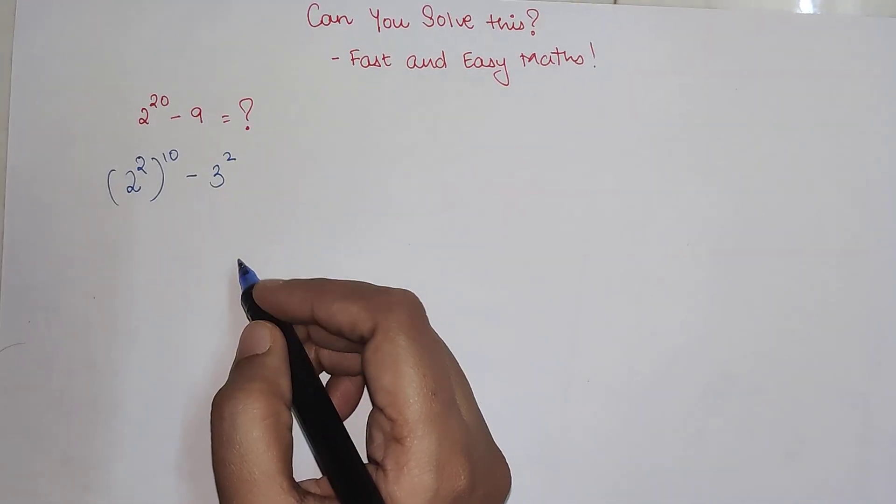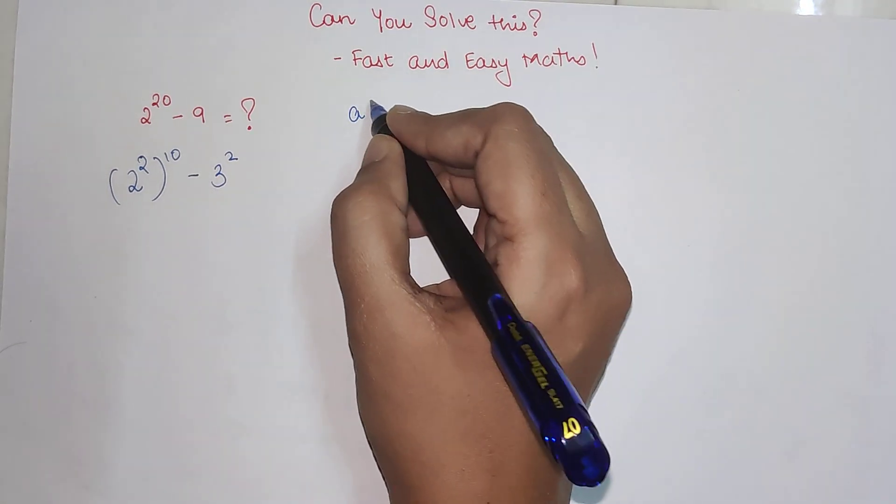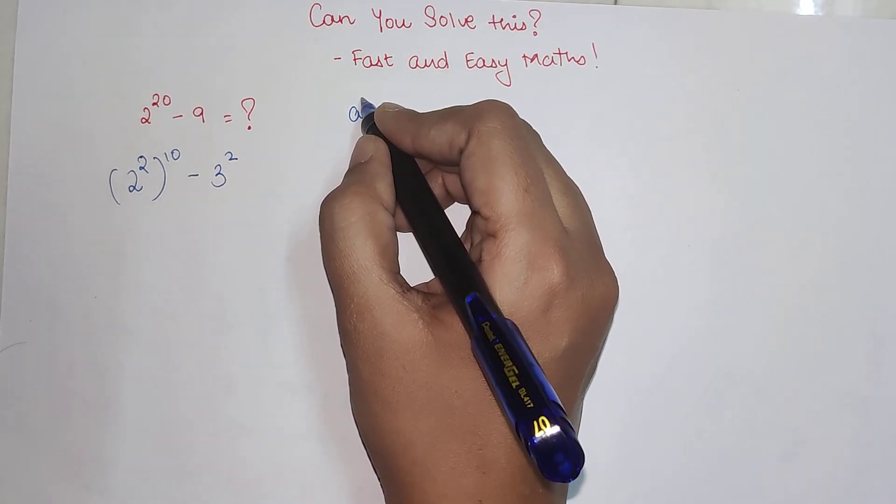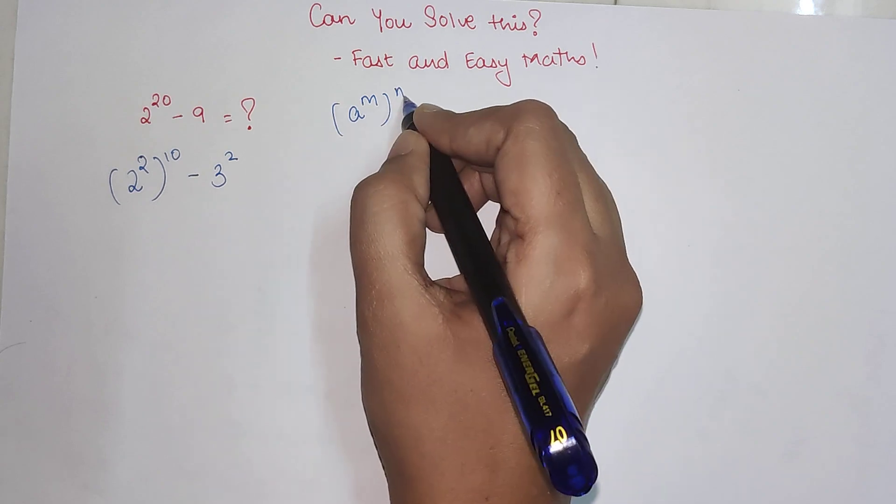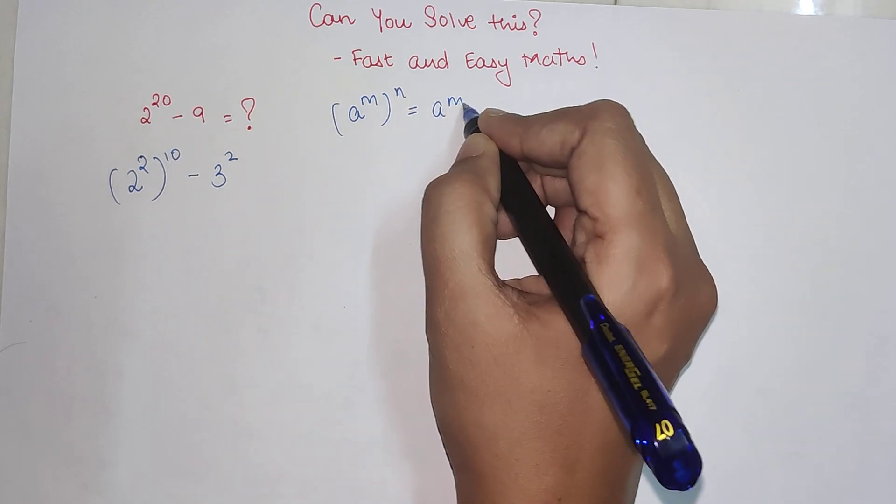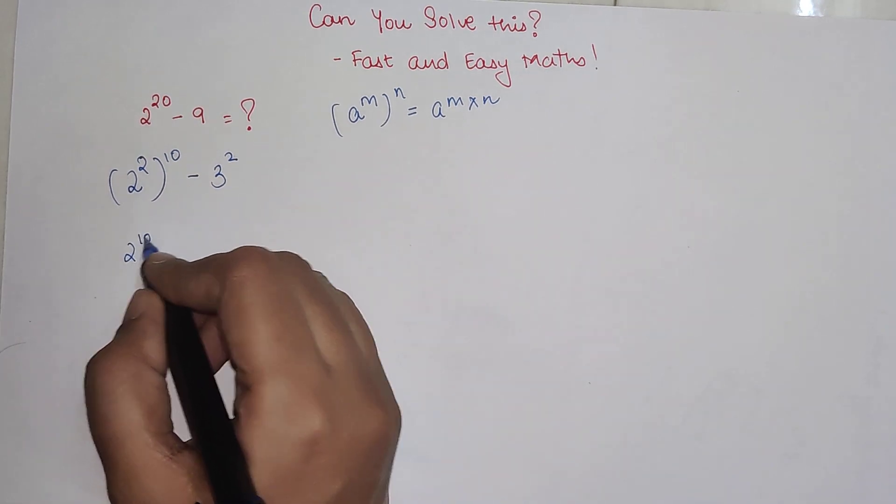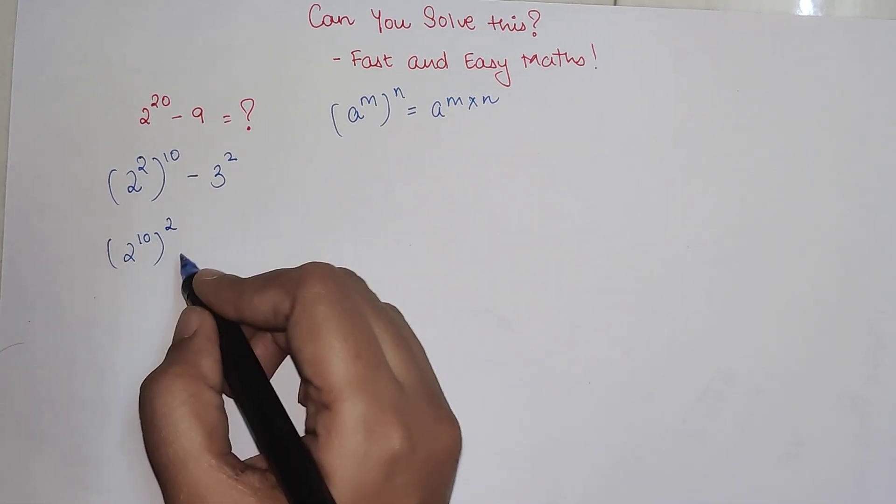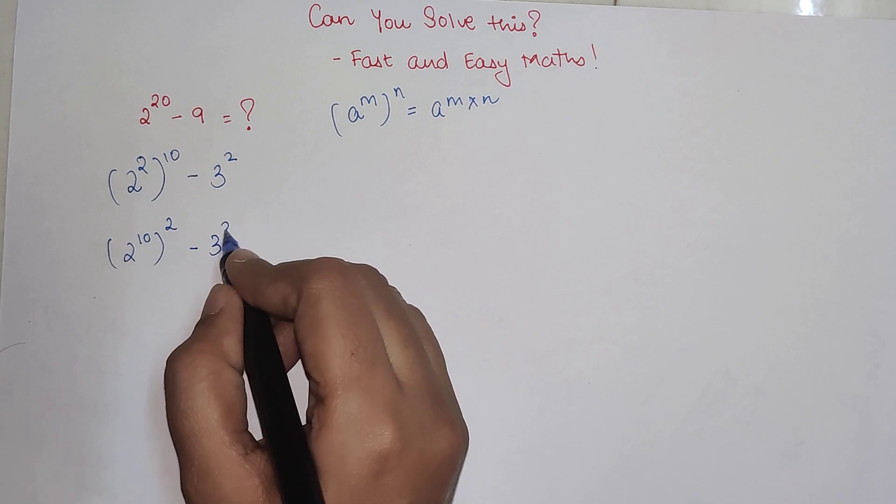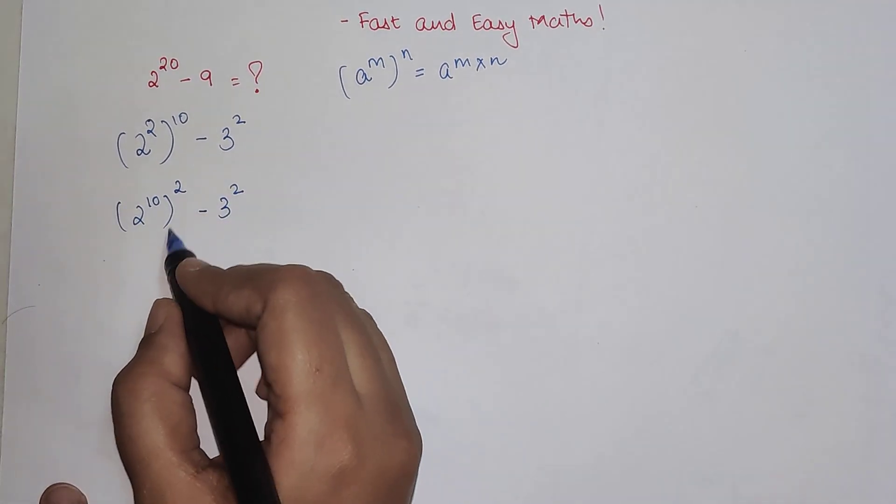(a^m)^n is nothing but a^(m×n). I can switch the indices inside out. So now this is looking like the identity a^2 - b^2.